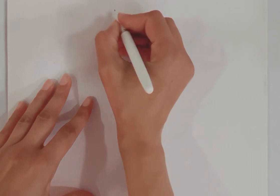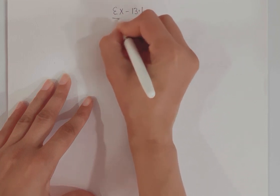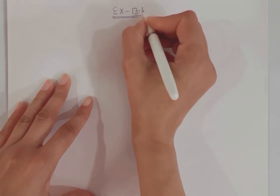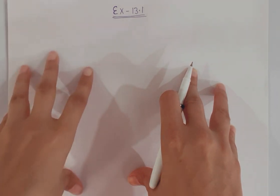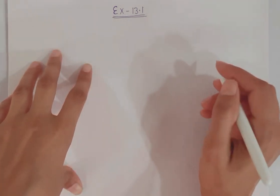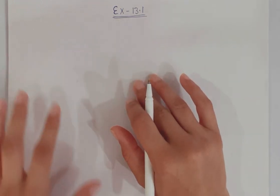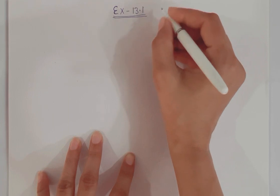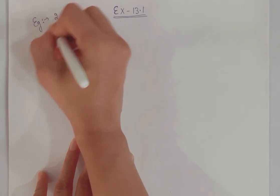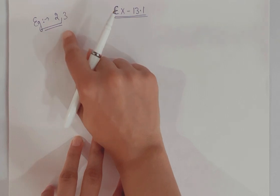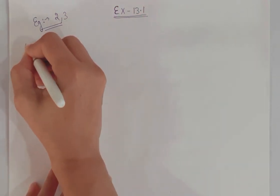Hello friends, welcome back to our channel 'Learn with Nishman.' Today we are going to start with Exercise 13.1. In the last video, I gave you the introduction to Chapter 13, where I covered the basic formulas for the six figures in this syllabus — their curved surface area, total surface area, and volume. Now starting with exercises, we'll learn how to apply those formulas. The most important examples in this exercise are example number 2 and example number 3 — do not skip them.